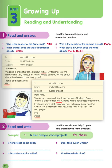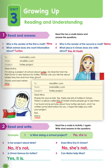Now let's move to question 2, read and write. Read the emails in activity 1 again. Write short answers to the questions. For example, is Nina doing a school project? Yes, she is. Number 2, is her project about birds? No, it's not. Number 3, is Oman famous for turtles? Yes, it is. Number 4, does Nina live in Oman? No, she's not. Number 5, can Maha help Nina? Yes, she can.